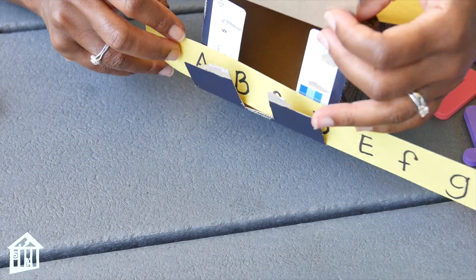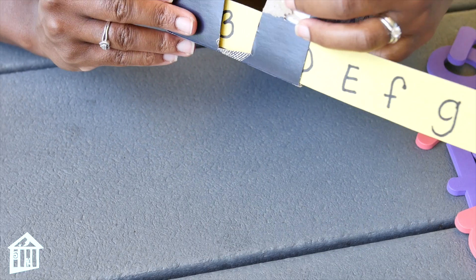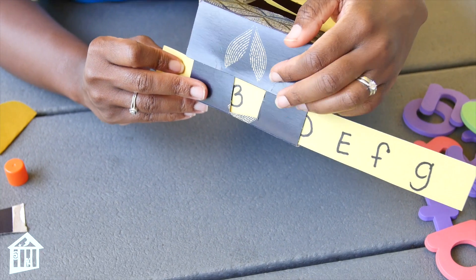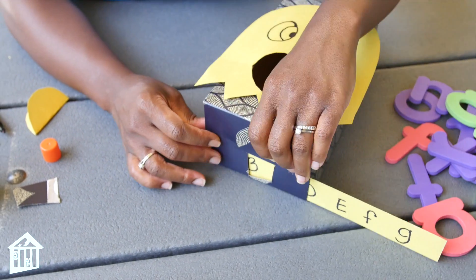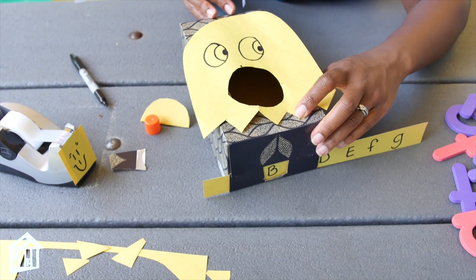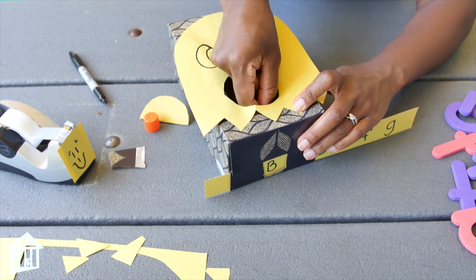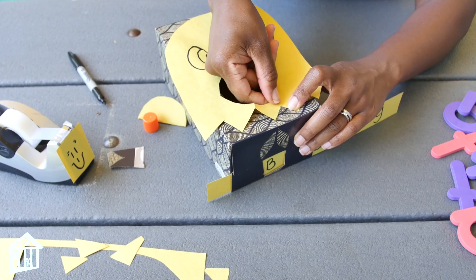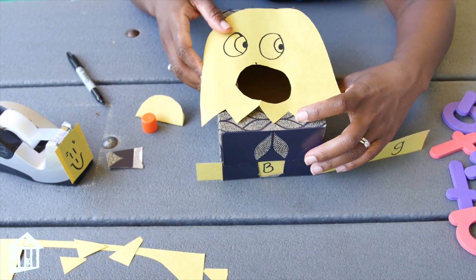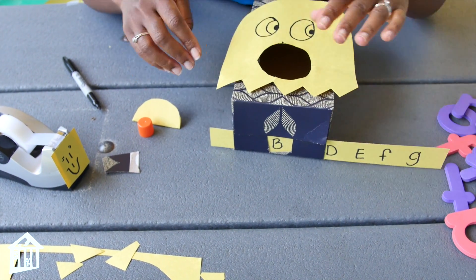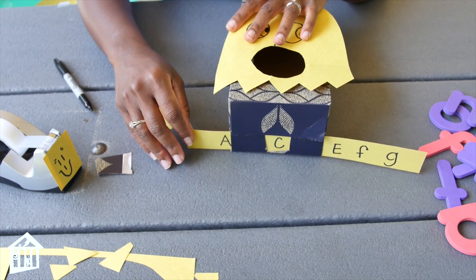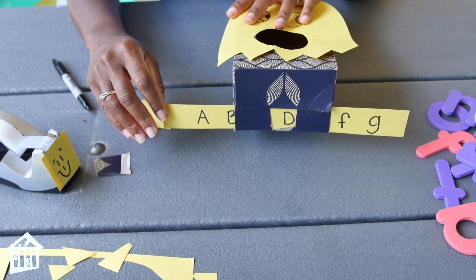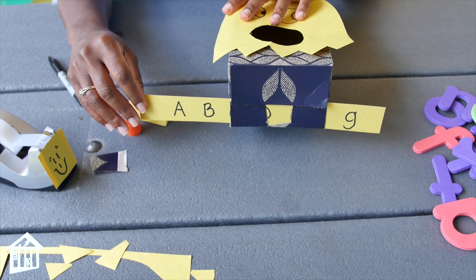So you're going to insert it like this. Close this down. Once you get your strip inside, you're going to tape it down on the inside, all of your flaps. And that way it just looks like you have a view of each letter as you pull it through.